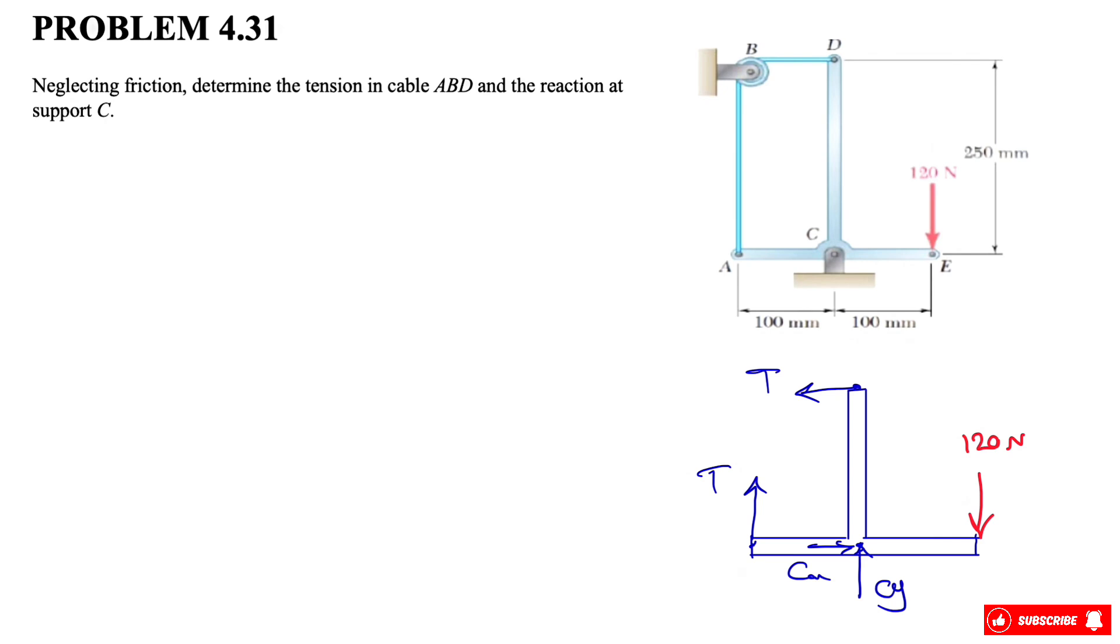Sum of all forces equals zero and same for the moment. It makes sense to take the moment about point C which has the most unknowns, so we can cancel out Cx and Cy and find T. We're going to use the 2D shortcut for finding moments.